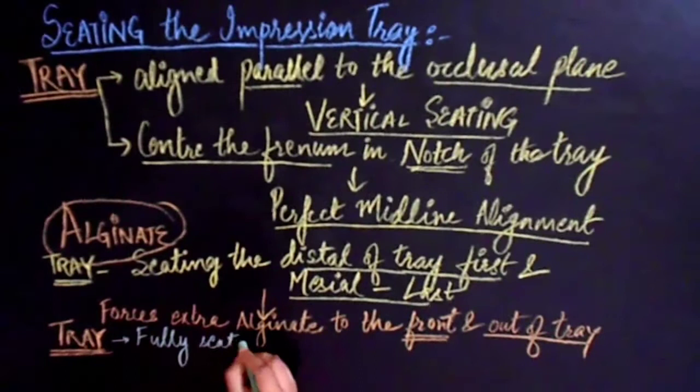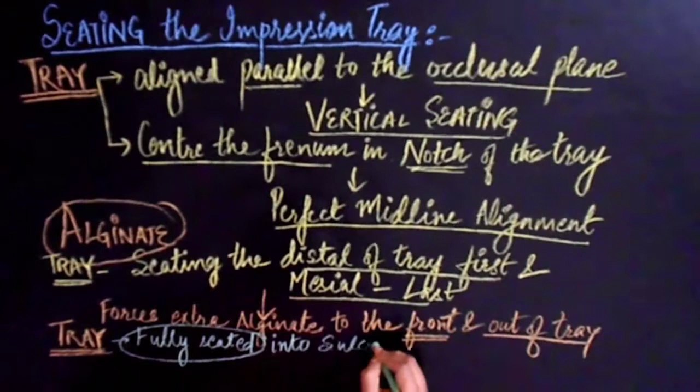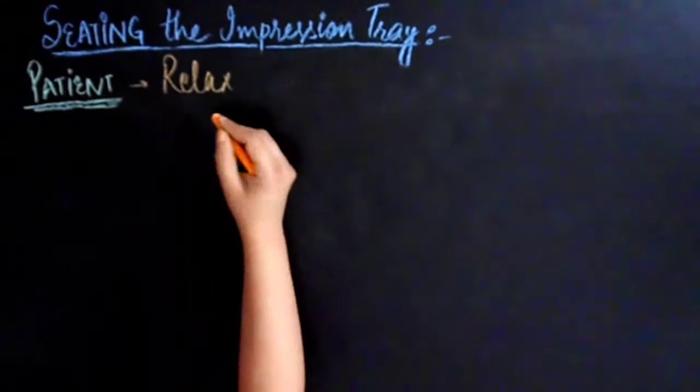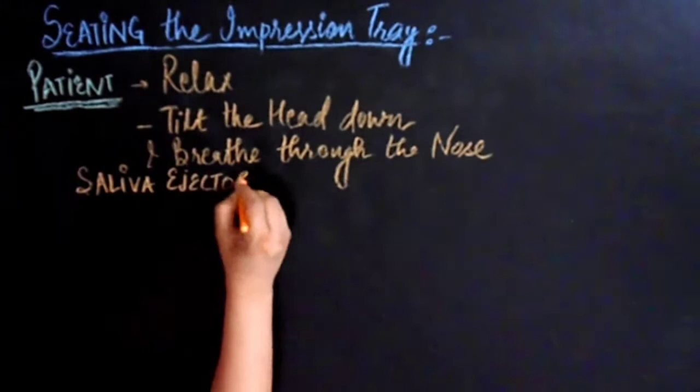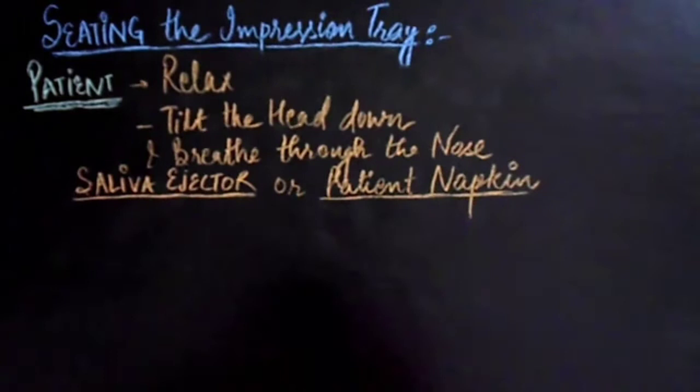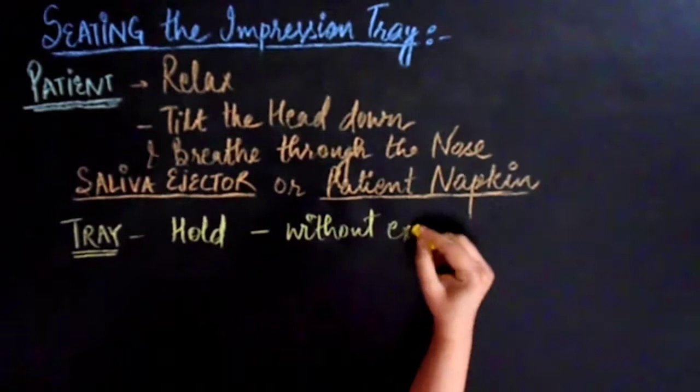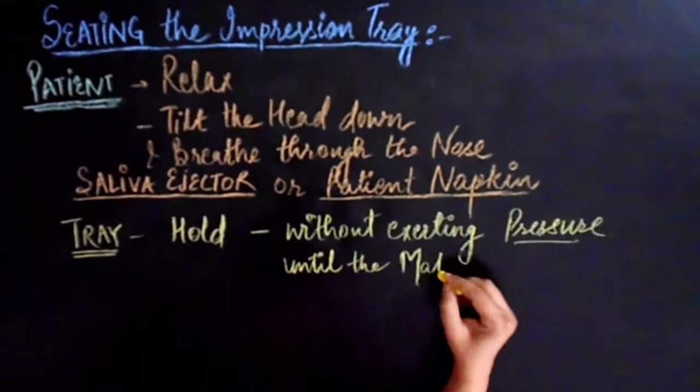If needed, use a mouth mirror to remove the excess and ensure that the tray is fully seated into the sulcus and not traumatic to the soft tissues. Make sure your patient is relaxed and tilt the head downwards. Ask the patient to breathe through the nose as the material is setting up. A saliva ejector or patient napkin should be in place to catch any excess saliva while the alginate is setting. Hold the tray passively in place without exerting pressure until the material is set.